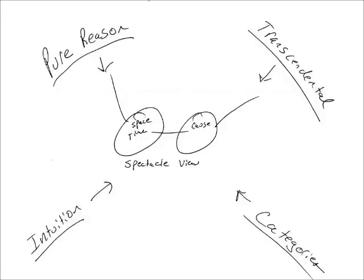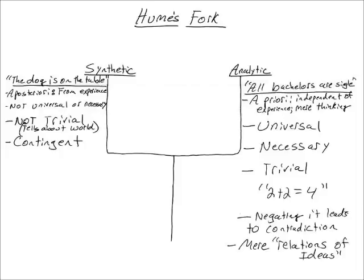Let's look at the historical context by looking at Kant's predecessor, David Hume. Hume argued that knowledge is of two types: it's either synthetic or analytic. An example of a synthetic claim is the dog is on the table. Synthetic statements are a posteriori because we learn them from experiencing the world. Such statements are not universal, nor are they necessary, and negating them — saying it's not the case that the dog is on the table — does not lead to a self-contradiction.